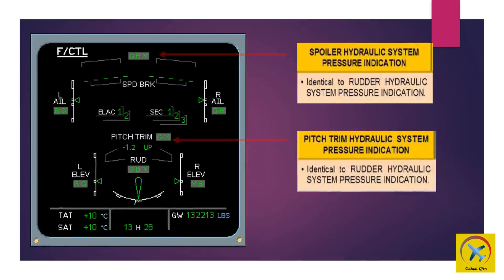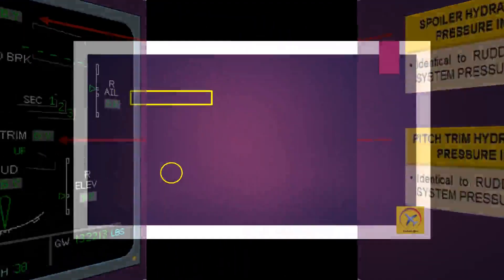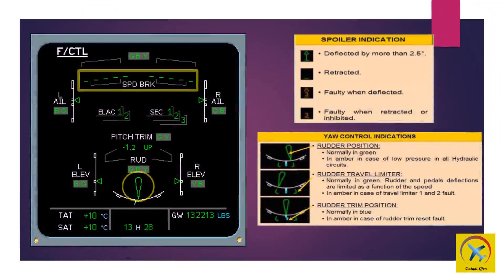Spoiler and pitch trim hydraulic system pressure indication is identical to rudder hydraulic system pressure indication. Spoiler up arrow indication shows in green if deflected by more than 2.5 degrees; no up arrow if retracted. An amber up arrow and position number of a spoiler shows in amber when a fault is detected. An amber position number shows when a fault is detected while retracted or inhibited.